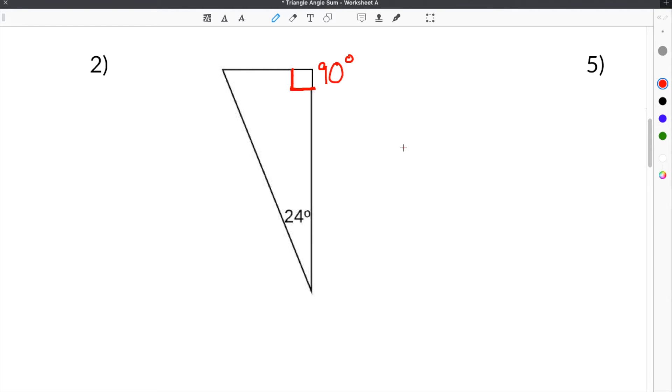So a shortcut to do this, instead of doing the way we did it in problem 1, would be to add these two together and then subtract it from 180 degrees. So the quickest way to do this would be 90 plus 24, which is equal to 114 degrees. And then you just do 180 minus 114, because they have to add up to 180.